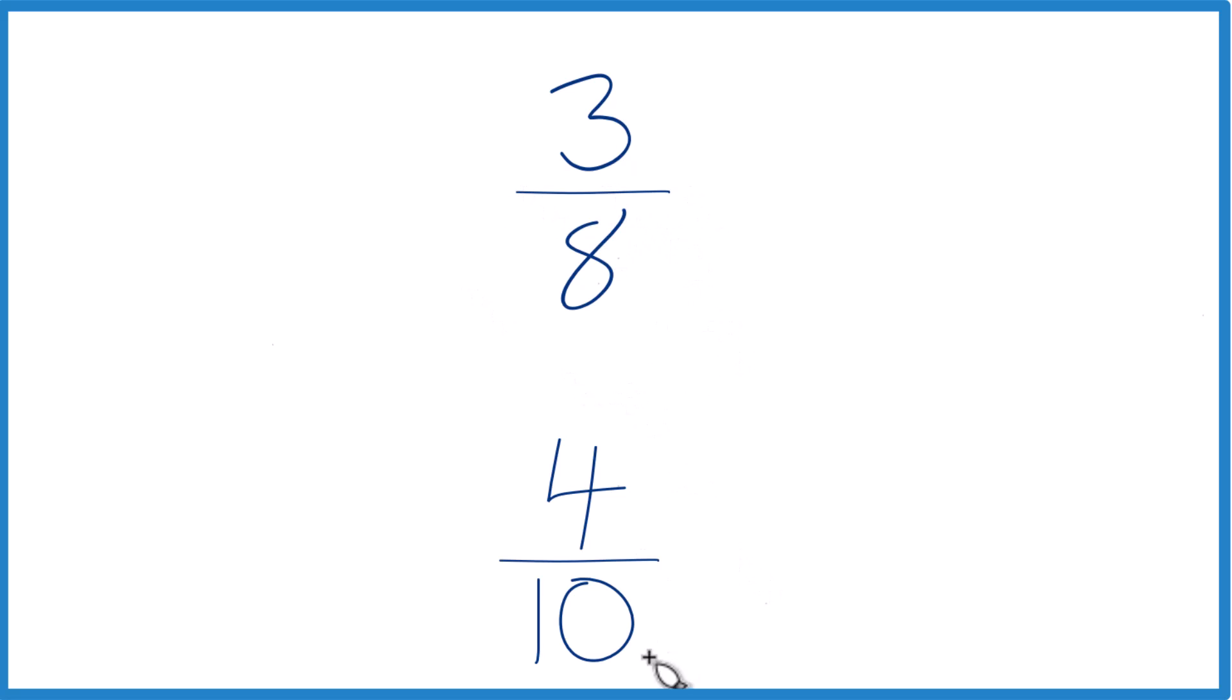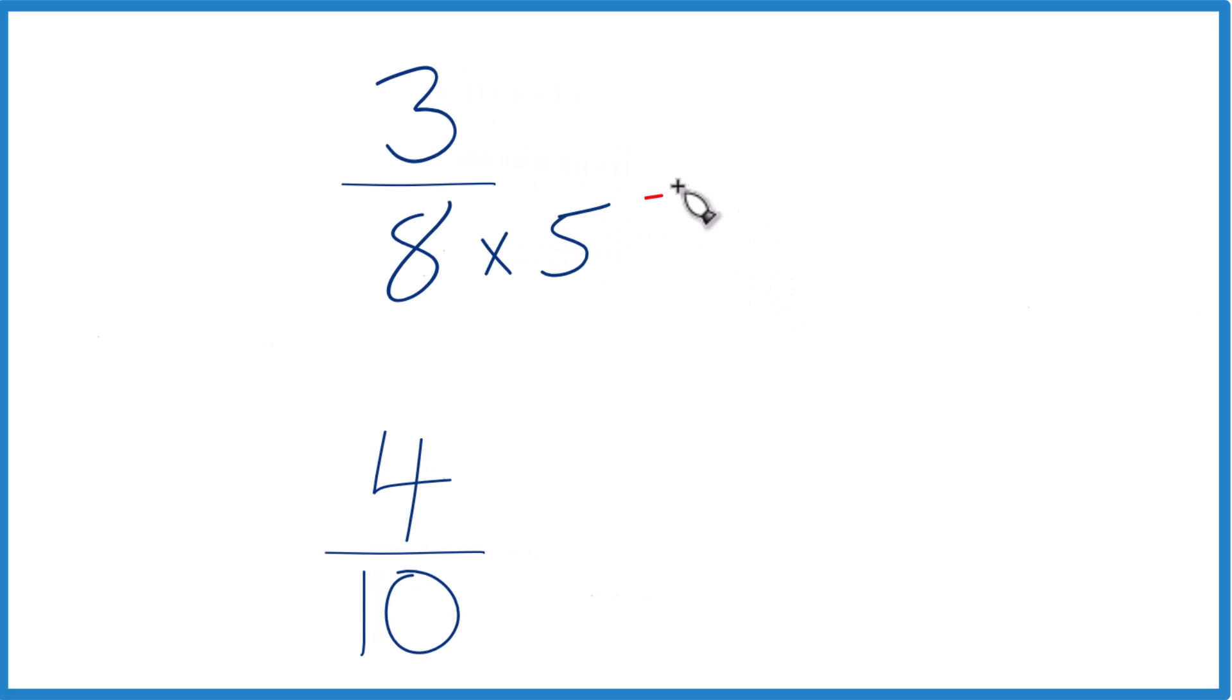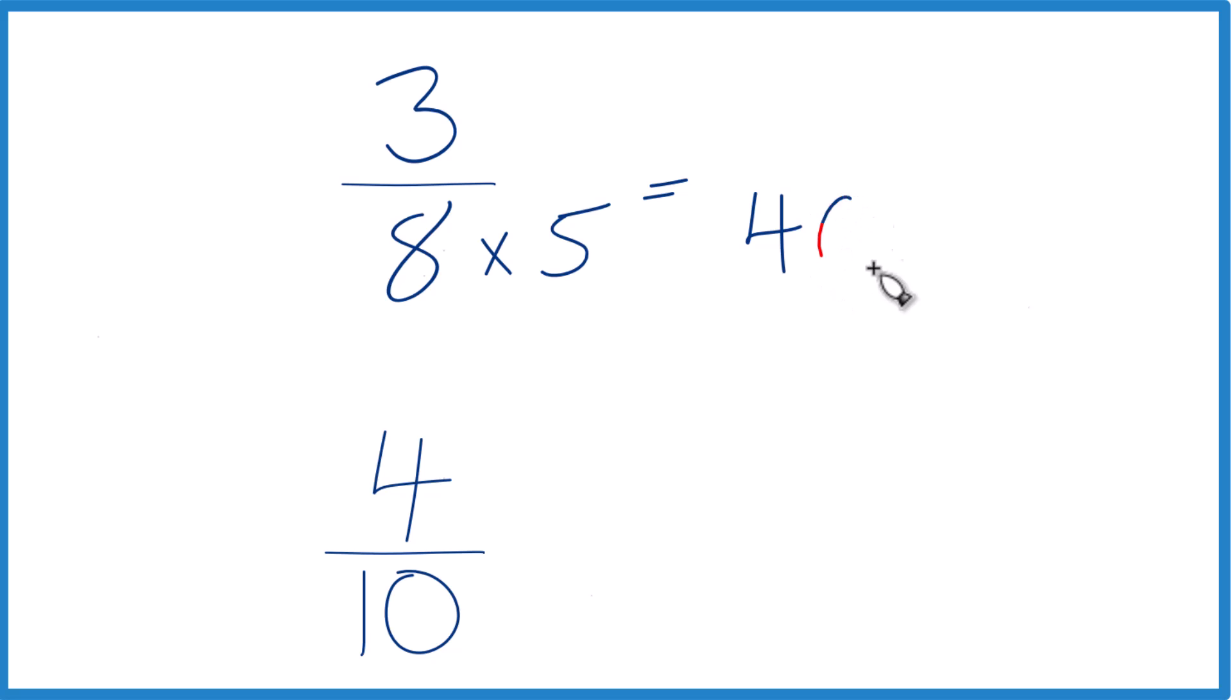The other way is to figure out a common denominator here. So I know 8 times 5 would give me 40. And then down here, 10 times 4 equals 40. So that's a common denominator.